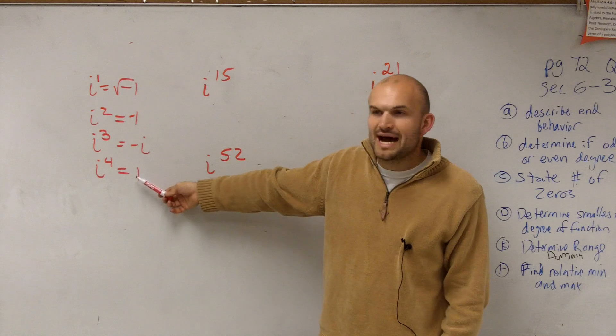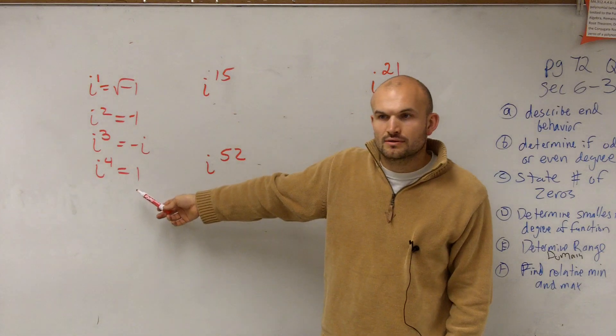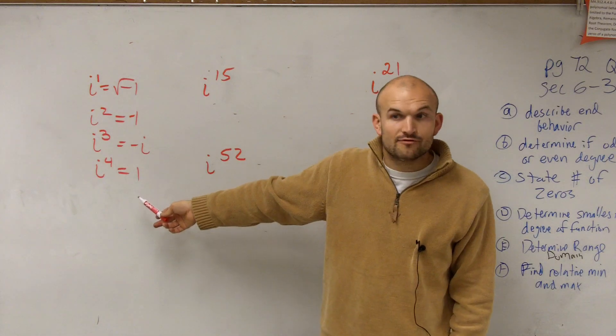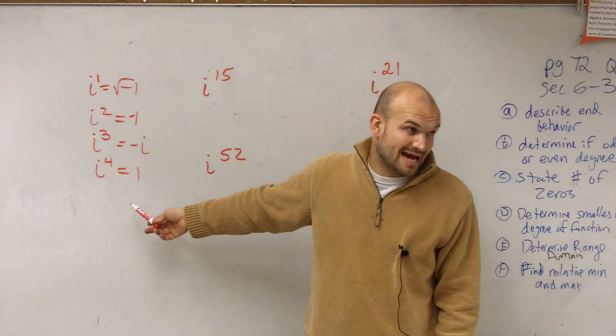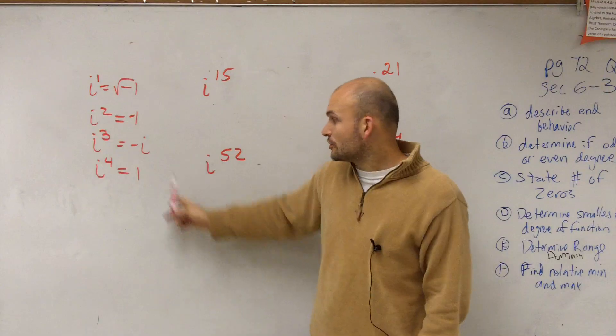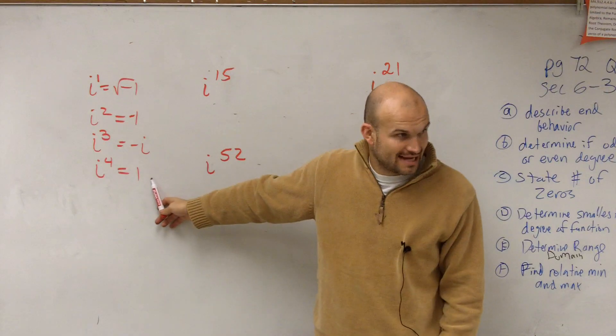Think about what's i to the fourth — it's one. If you multiply by i, which would be i to the fifth, you're going to get back to i again.